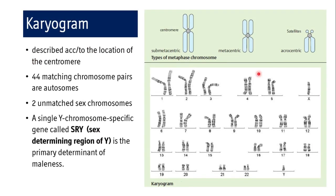Coming to karyogram — what is a karyogram? It is the result of karyotyping. It is described according to the location of the centromere. These are the types of chromosomes observed under metaphase. Depending on the location of the centromere, they are named as submetacentric, metacentric, or acrocentric. This is the karyogram which displays the complete chromatin of an organism.